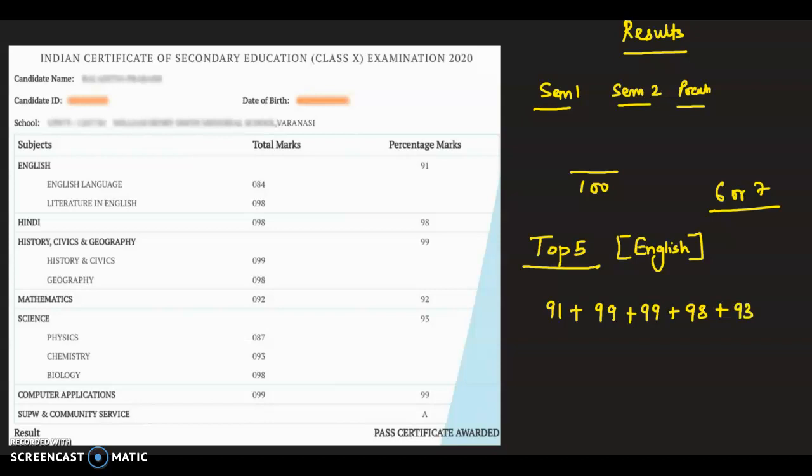So, you can see that science marks, they've taken this average - physics, chemistry, biology marks their average. Then you will have to divide it by 5.